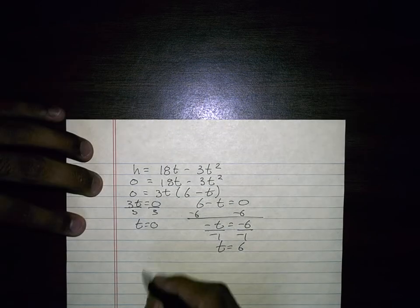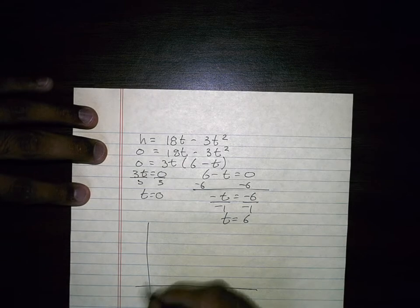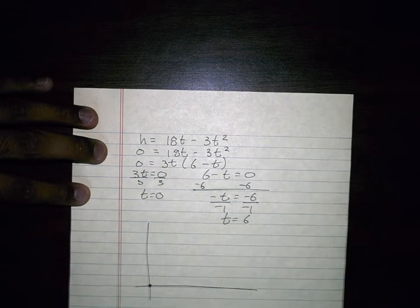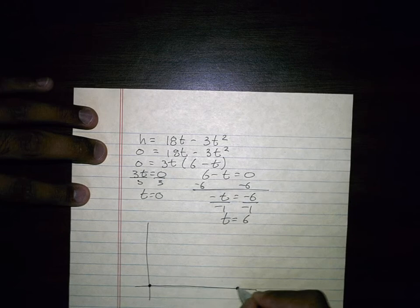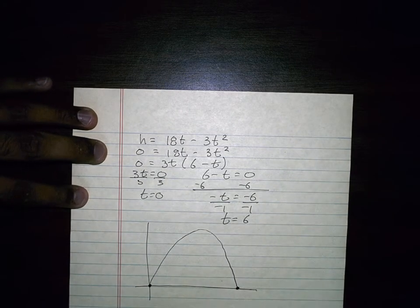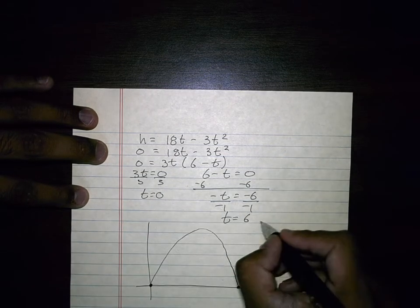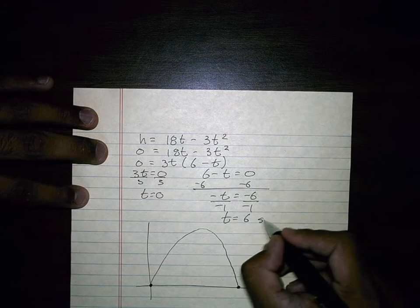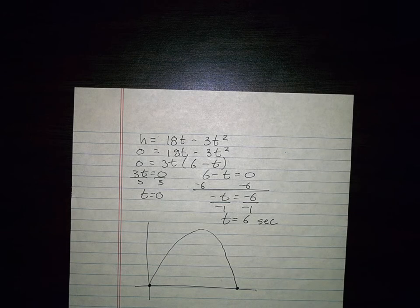So if I drew a quick little sketch of this parabola, just kind of get a picture of it. It hits the ground at (0, 0), pretty much, and then it hits it at 6. And the question is, when does it hit the ground after we throw it? Well, this is the starting point, so I don't want that one. So the answer is, when does it hit the ground after 6 seconds? After 6 seconds. Alright, let's do one more example.